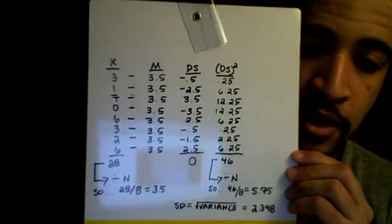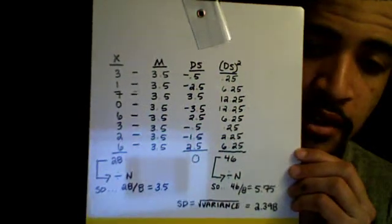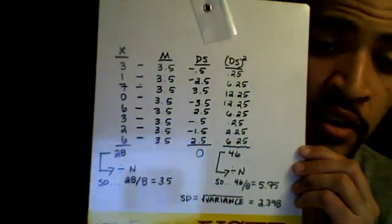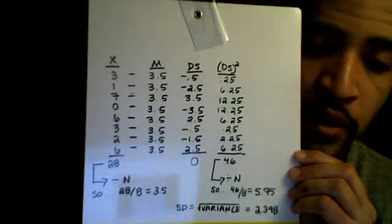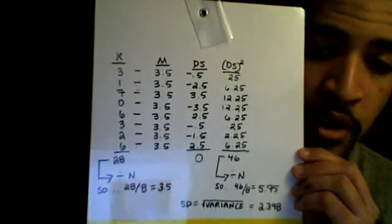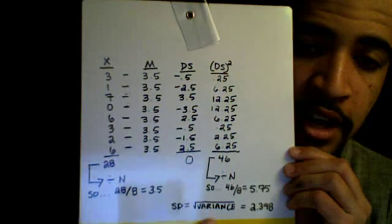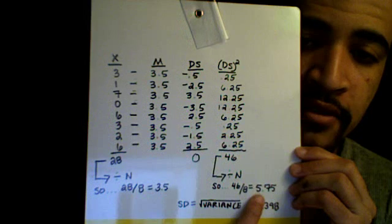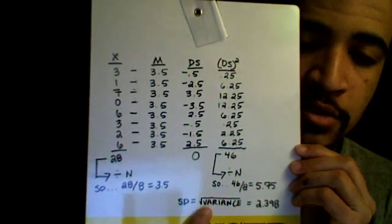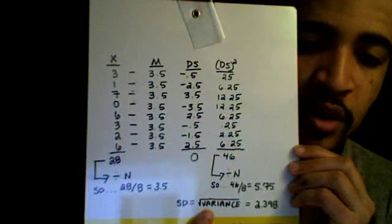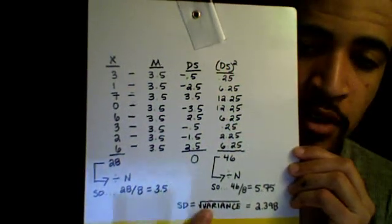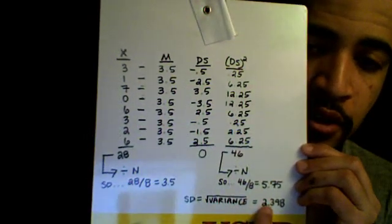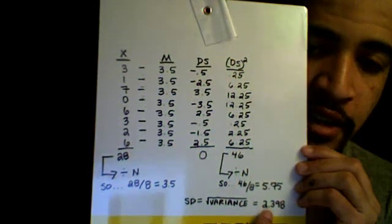The variance is similar to the standard deviation, which is the last step. What you do for the standard deviation is very simple — probably more simple than any of the other steps. Standard deviation is just the square root of the variance. So I take my 5.75 and square root it — not square it, square root it. The square root of 5.75 is 2.398. That is your standard deviation.